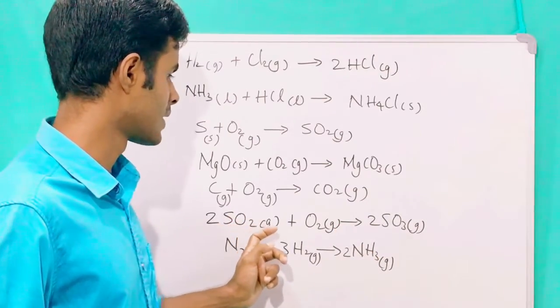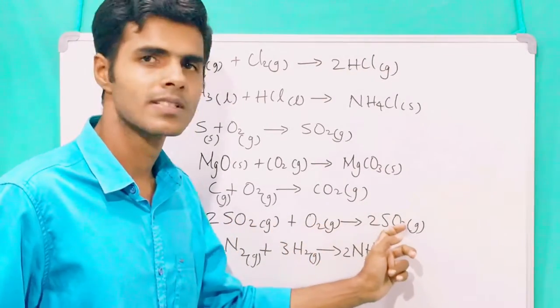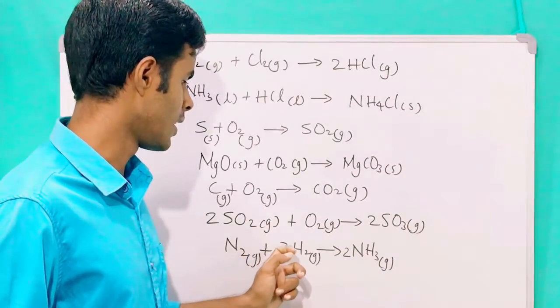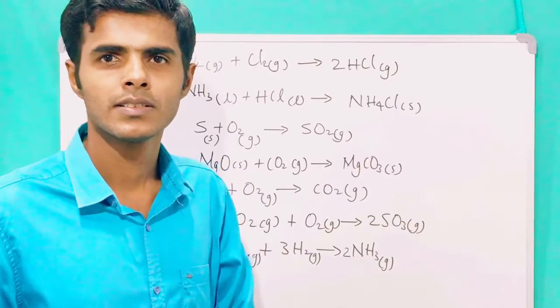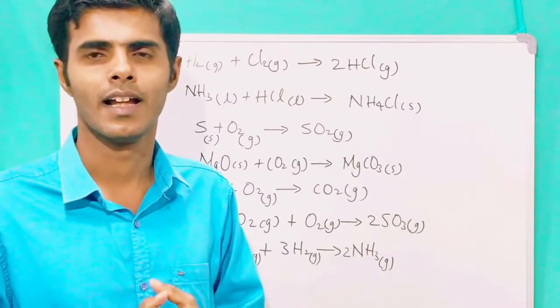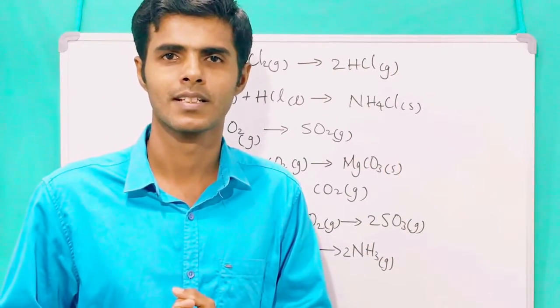Sulfur dioxide combines with oxygen to produce sulfur trioxide. Nitrogen and hydrogen combine together to form ammonia. These are some additional examples for combination reactions.